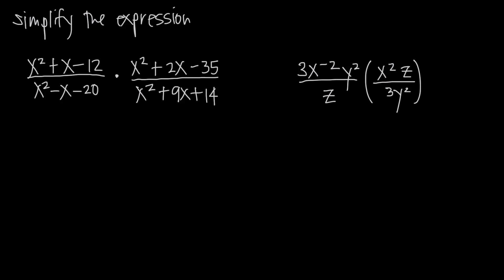In this video, we're talking about multiplication of rational expressions. Remember that a rational expression is just a fraction where either the numerator and/or the denominator is a polynomial, not just a simple whole number. We've got a couple of examples here, and we're actually going to start on the right with this second example. We have 3x to the negative 2 y squared divided by z, times the other rational expression x squared z over 3y squared. So we're multiplying these together in order to simplify this expression.